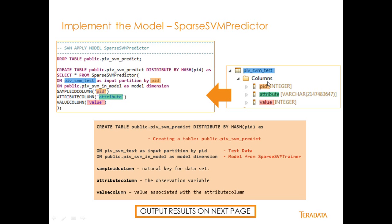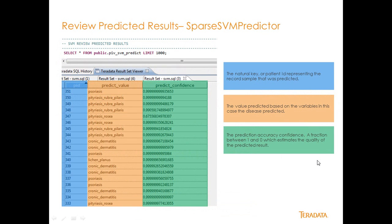Sample ID column is my PID patient identifier. My attribute column, again, is my attribute from right here. And then my value column is the value that's associated with that value for that patient. And that's right there. And then I run this. And that's basically how all of this works.